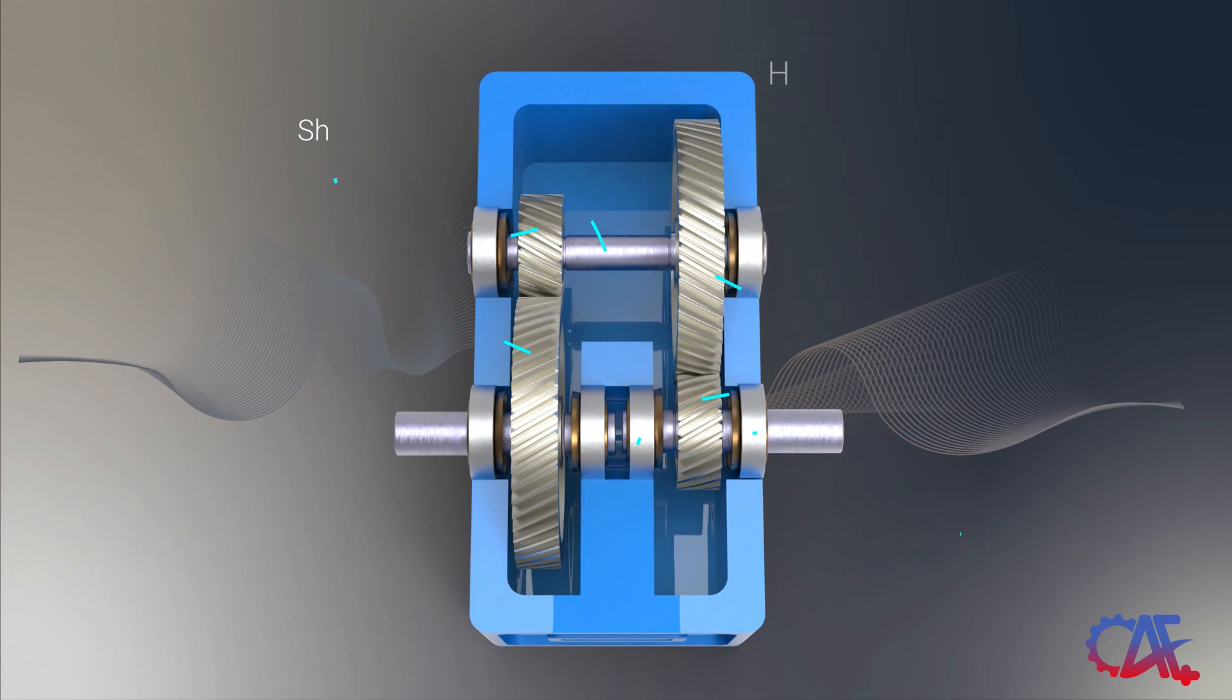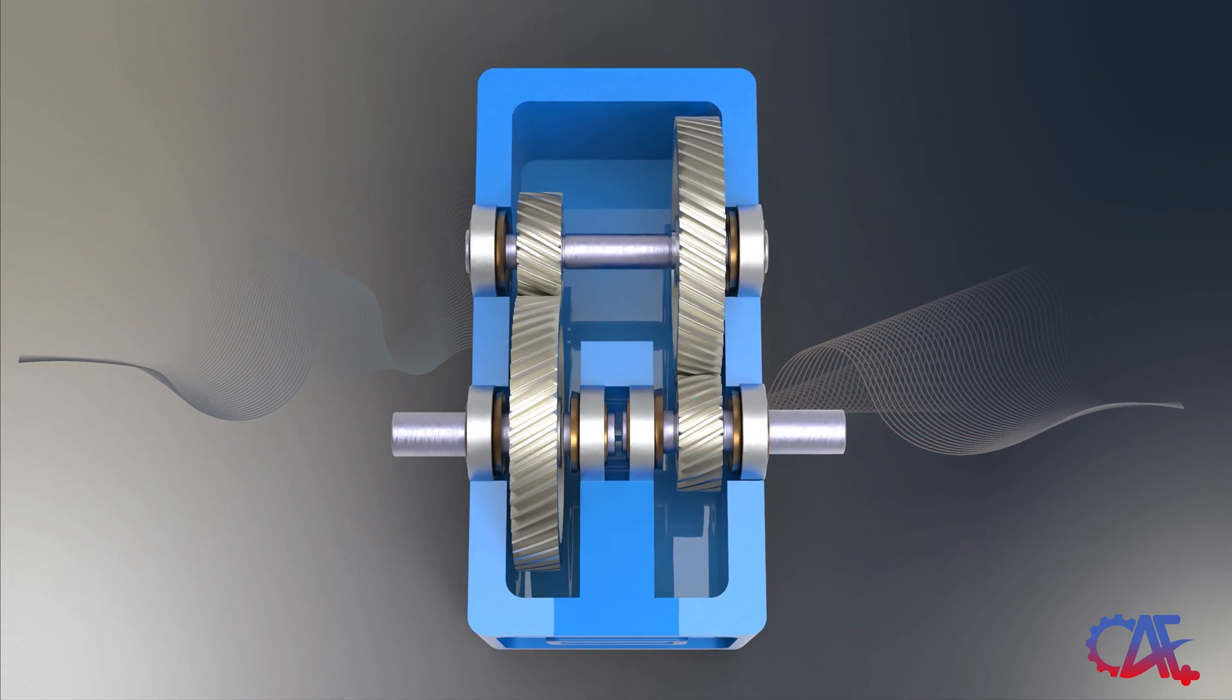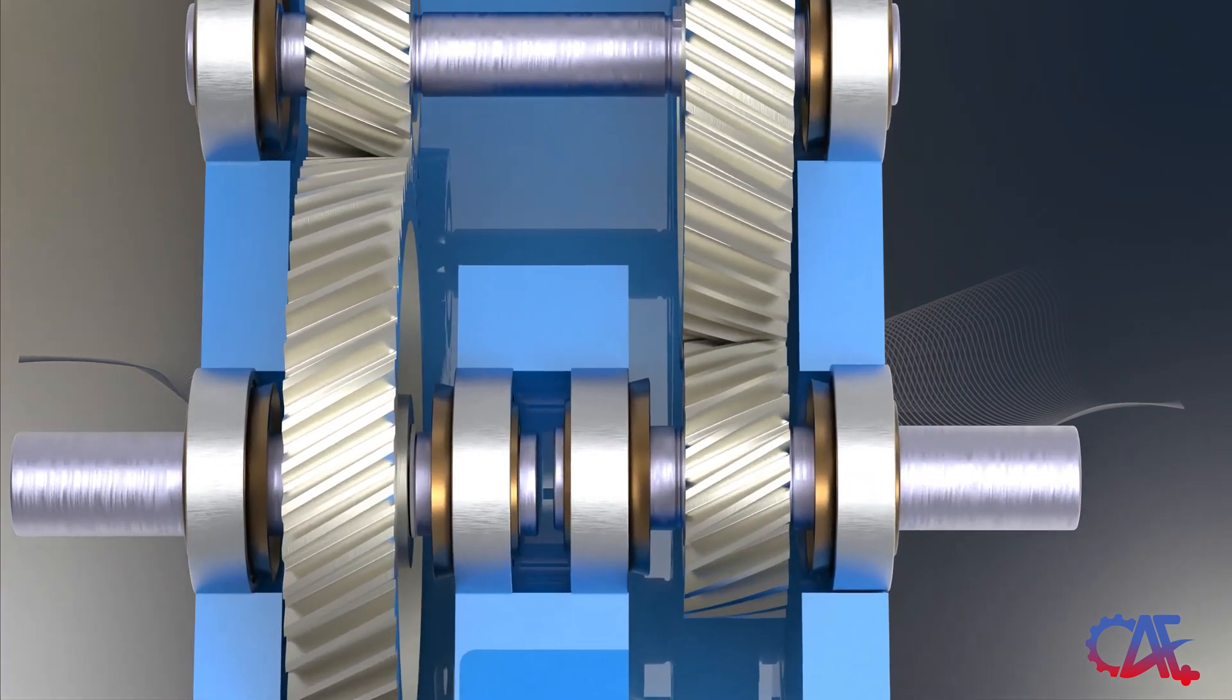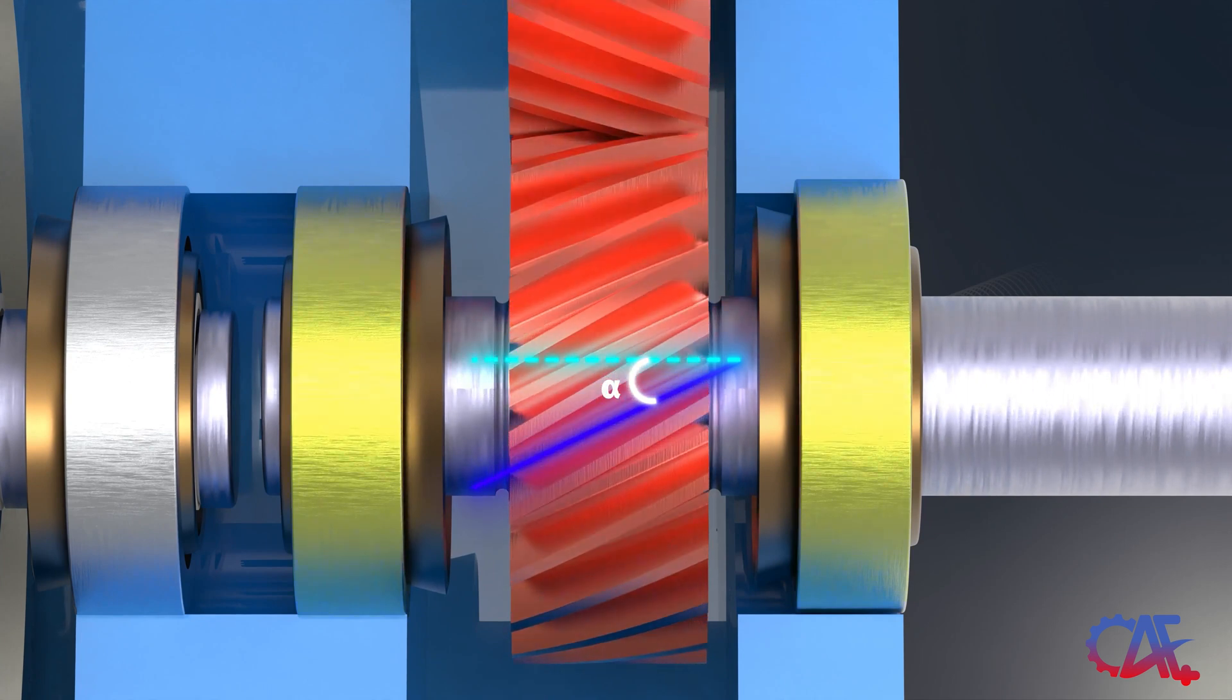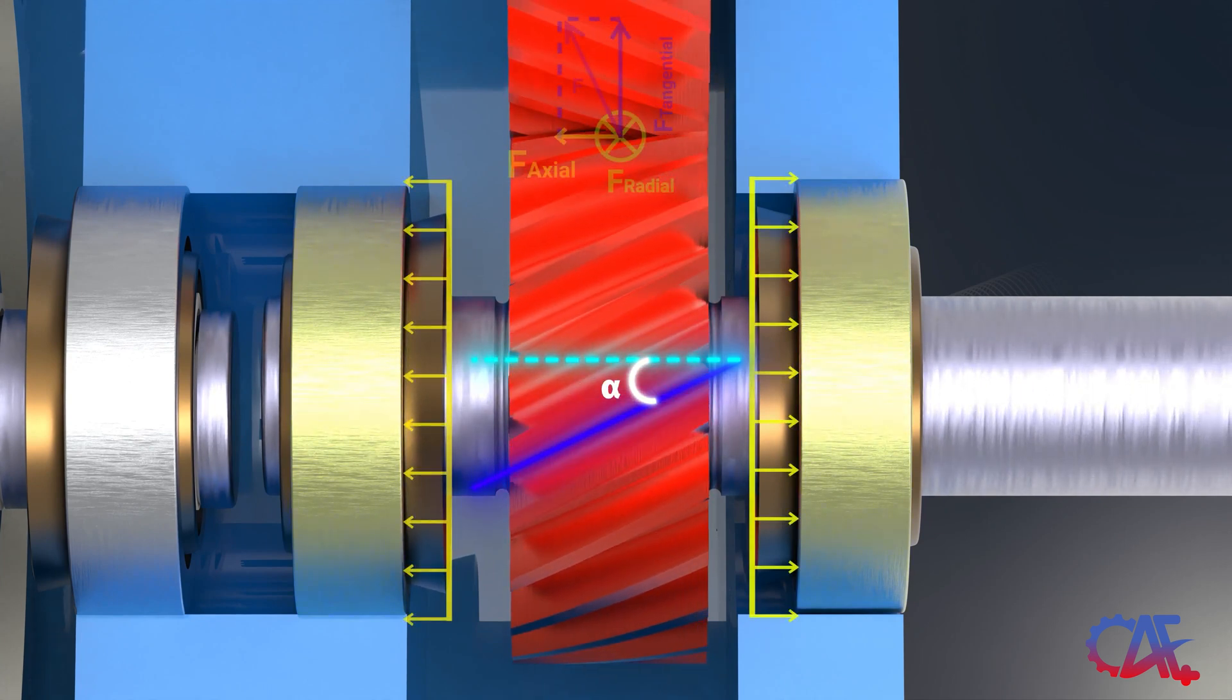Gear speed reducers can utilize various types of gears. However, our focus here will be on helical gears. Due to their angled teeth, helical gears generate both axial and radial forces. This necessitates the use of bearings like tapered roller bearings, which can handle both loads simultaneously.